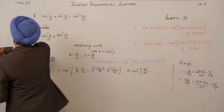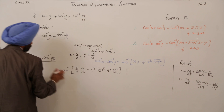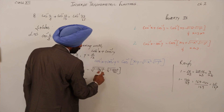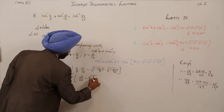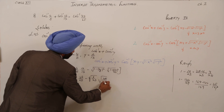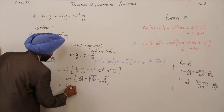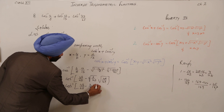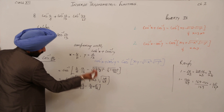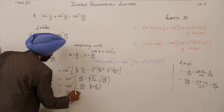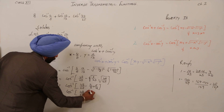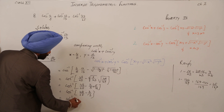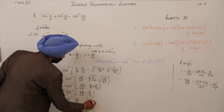Putting it all together, we have cos⁻¹(48/65 − 3/13). Taking LCM of 65 and 13, we get cos⁻¹((48 − 15)/65) = cos⁻¹(33/65). This matches the right-hand side, so the expression is proved.